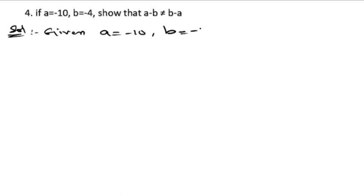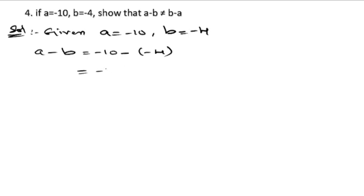value of b is minus 4. Now let us solve for a minus b. a minus b is equal to: a is minus 10, and minus b is minus 4, so minus 10 minus minus is plus 4, so minus 10 plus 4 is minus 6. This is the value of a minus b.